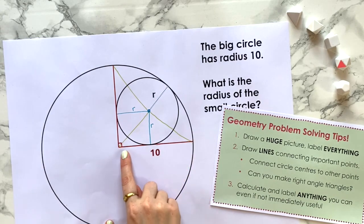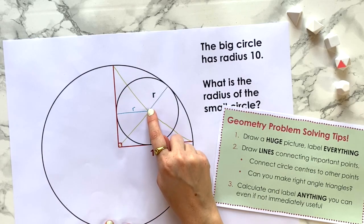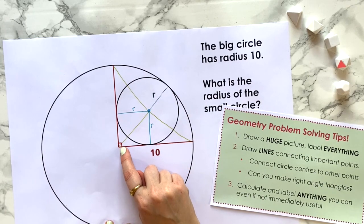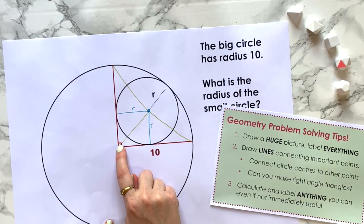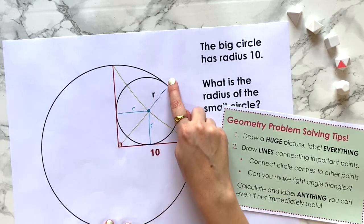What stands out to me actually is we should consider other radii that we could draw on. In particular, while we have got some lines drawn on here, we should note that if I draw a line connecting this center to this intersection point over here, that would give us another radius of 10.